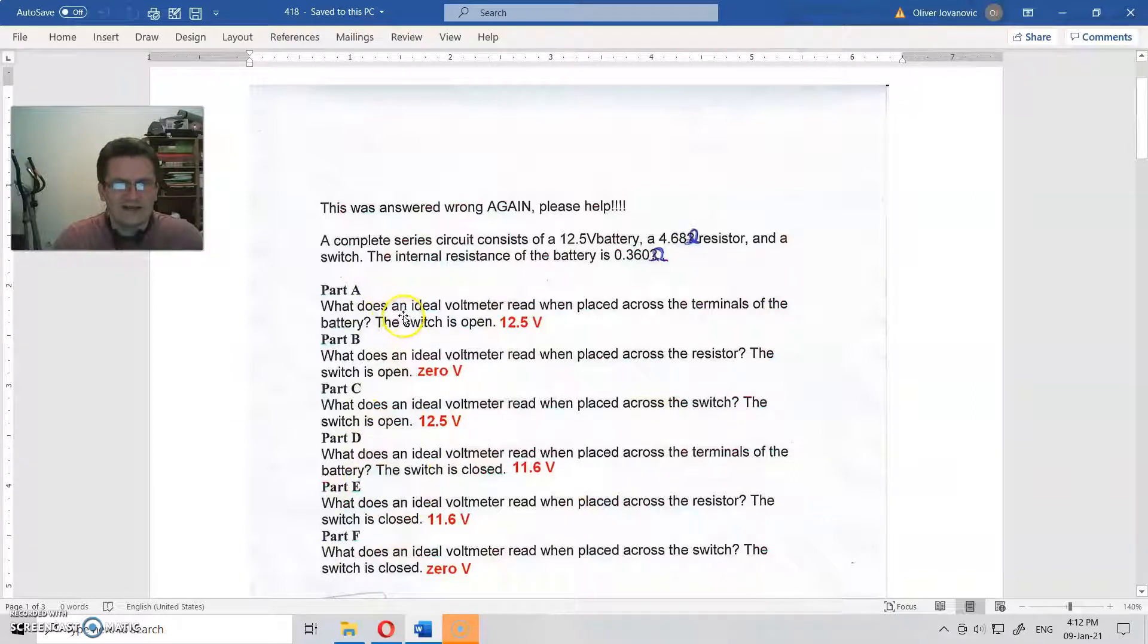Part A: What does an ideal voltmeter read when placed across the terminals of the battery? The switch is open. When there is no current throughout the circuit and the switch is open, the terminal will show us exactly what the battery is: 12.5V.